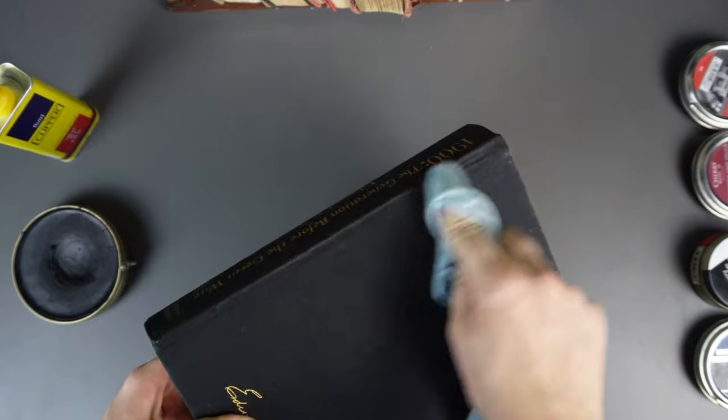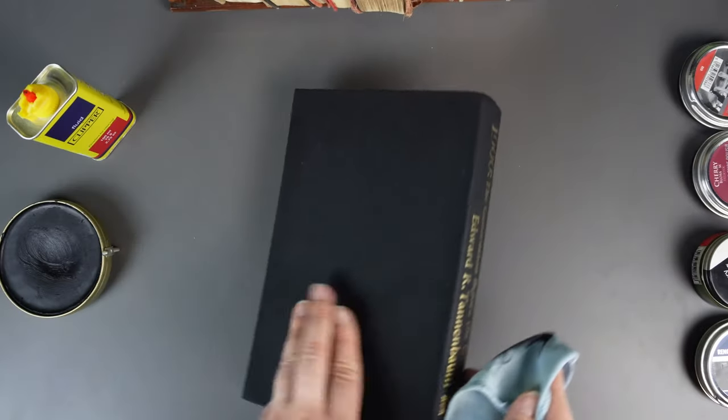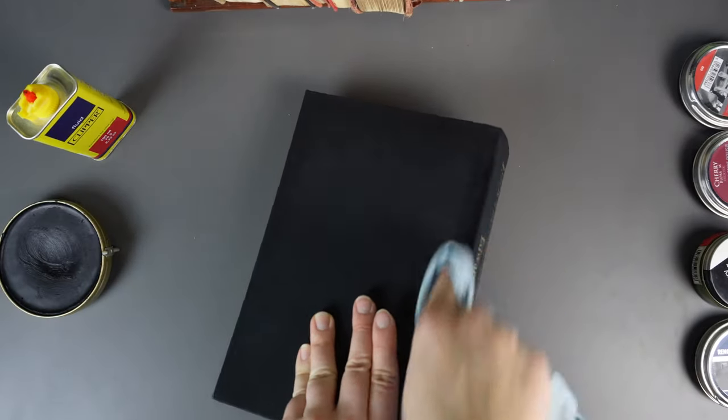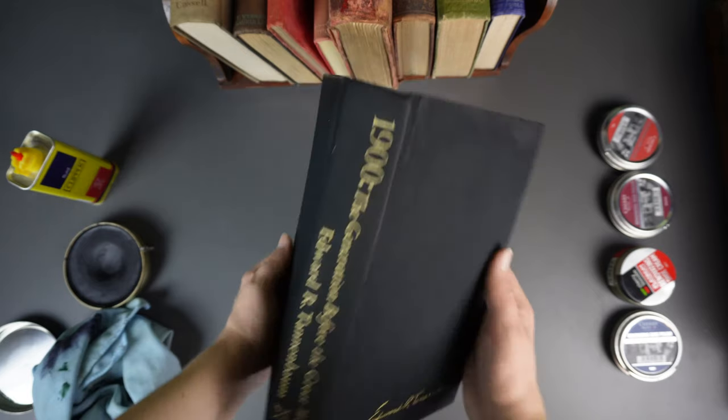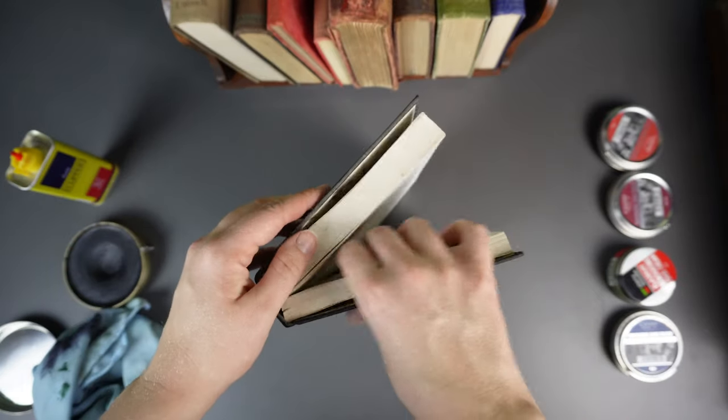For the joints, you may want to stick your fingernail right into the crevice to make sure the color gets fully applied. When you're done, set the book upright and open to dry for at least 30 minutes.